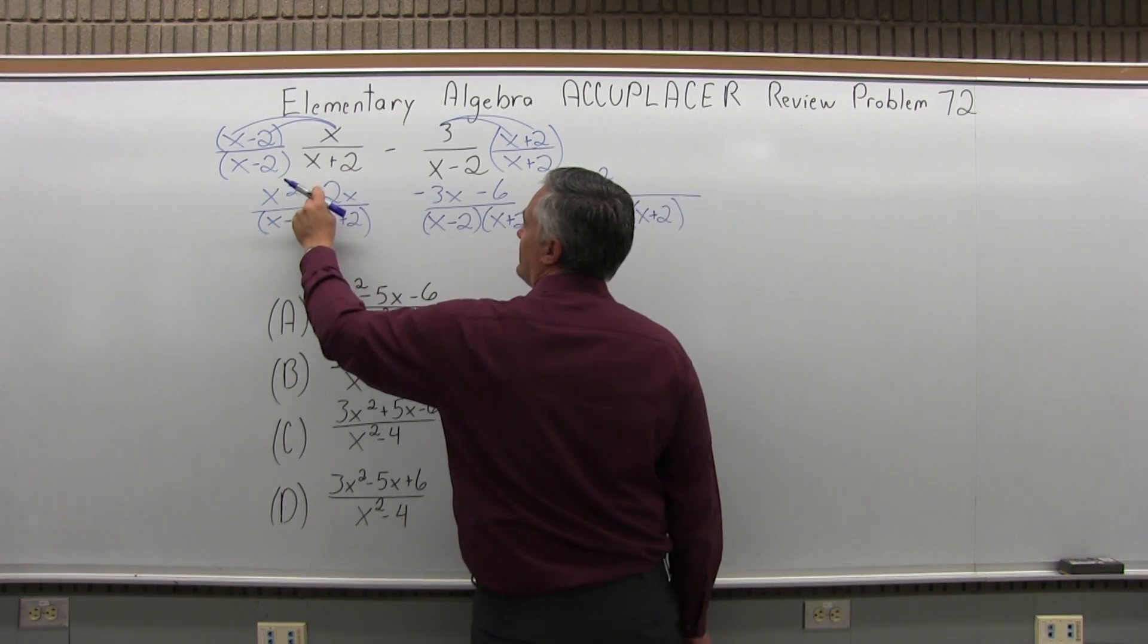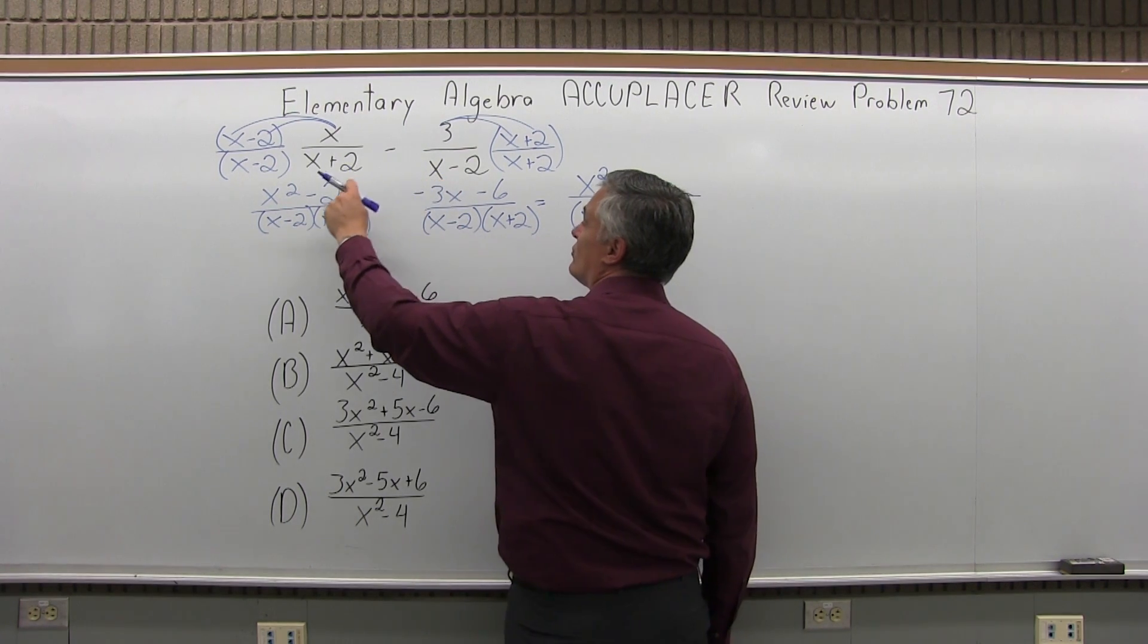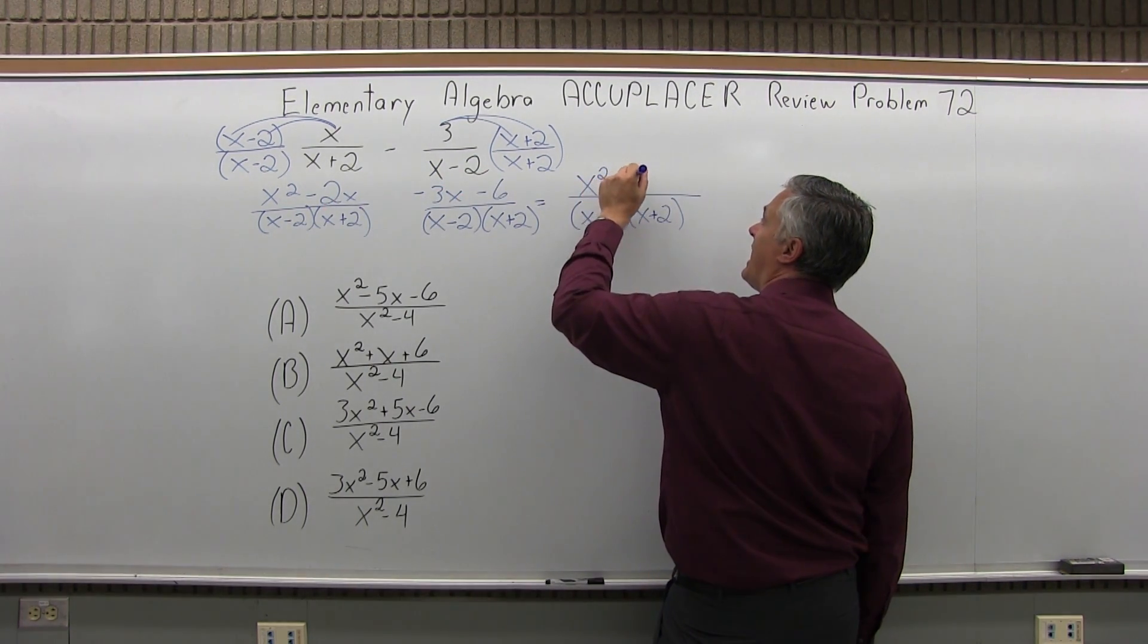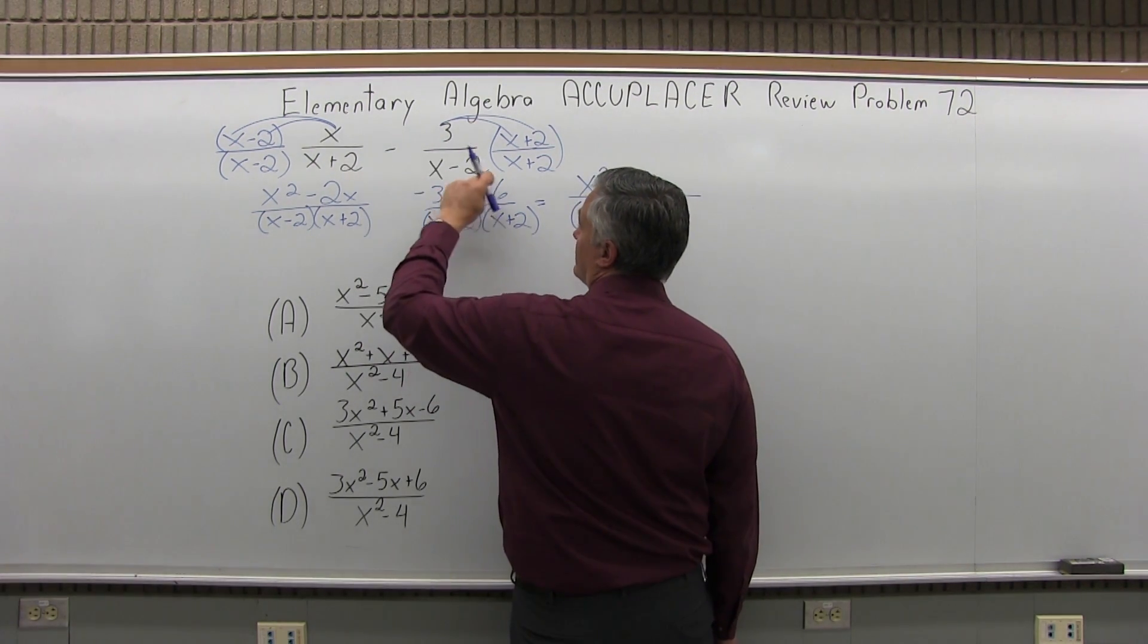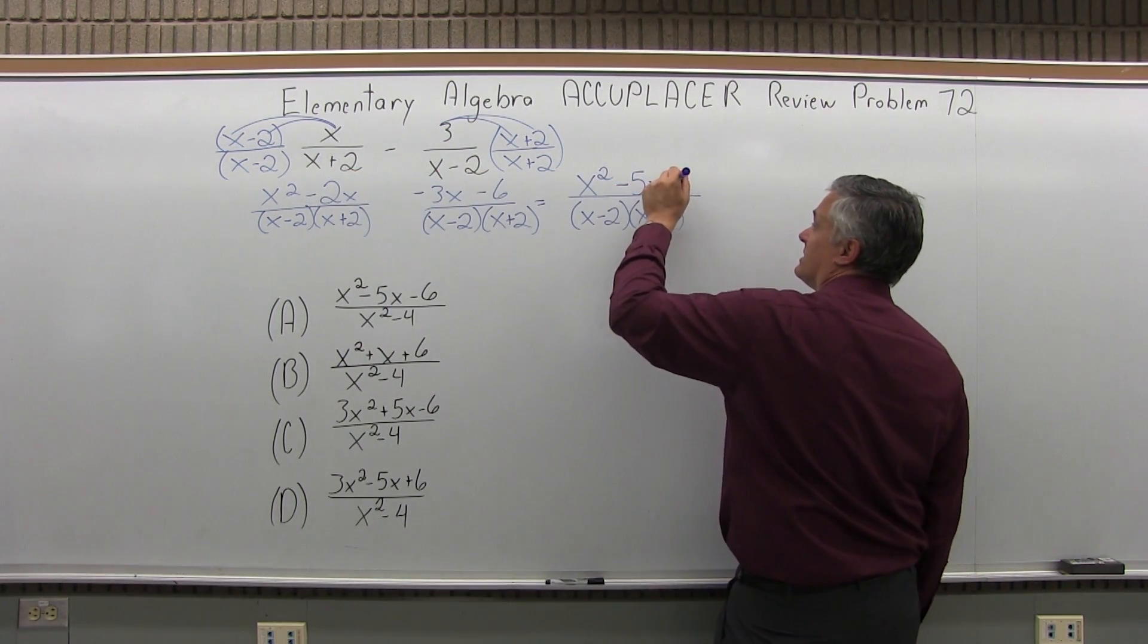Then I have a negative 2x and a negative 3x. I can combine those and make a negative 5x. And then minus 6, there are no other regular numbers to combine it with.